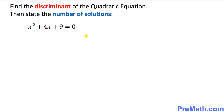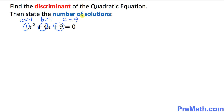Now let's get started with the next example. Once again we need to find the discriminant of this given quadratic equation. The very first step is to identify the coefficients. The coefficient for x squared is missing — by default it is 1, so a equals 1. b equals positive 4, and c equals 9.